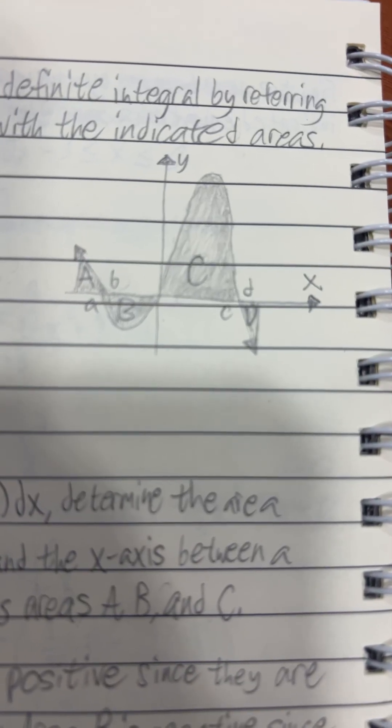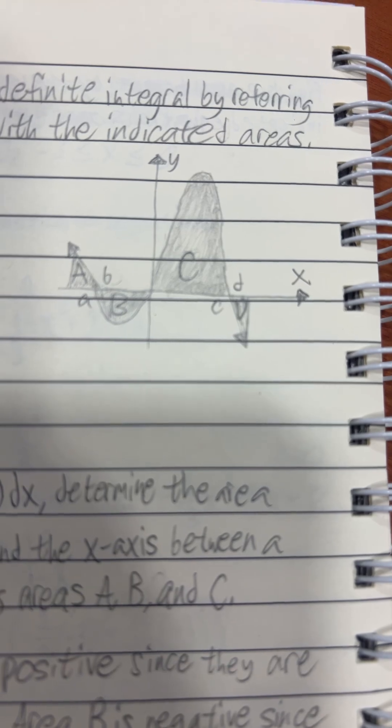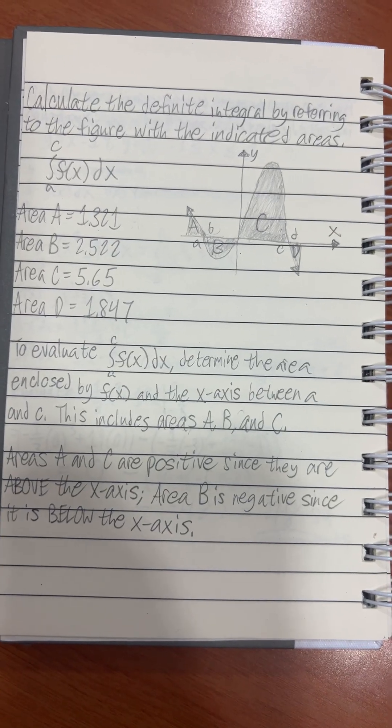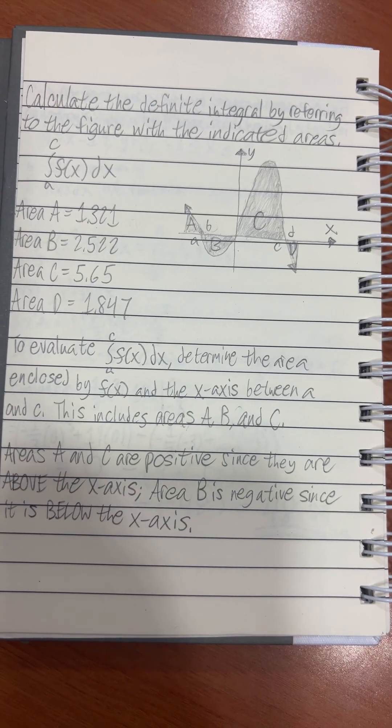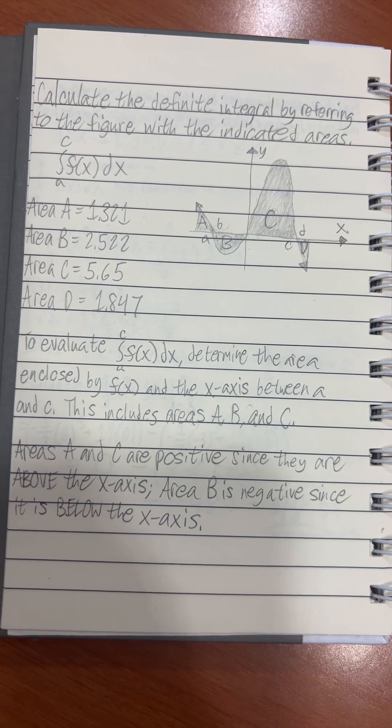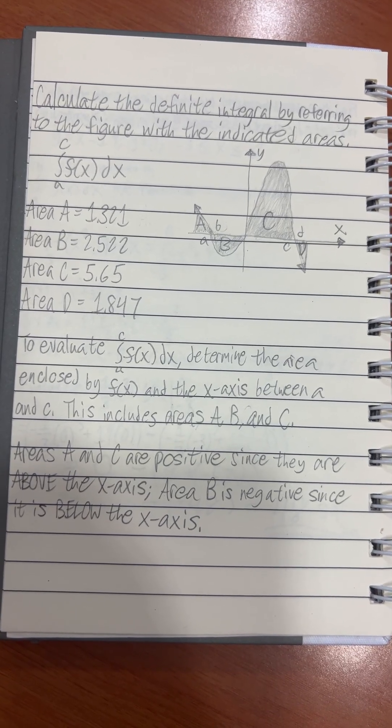Now take a good look at this beautiful graph I drew out myself. Areas A and C are positive since they are above the x-axis. Area B is negative since it is below the x-axis.